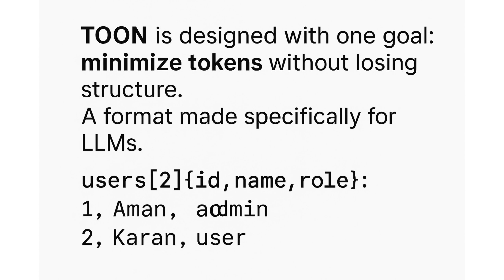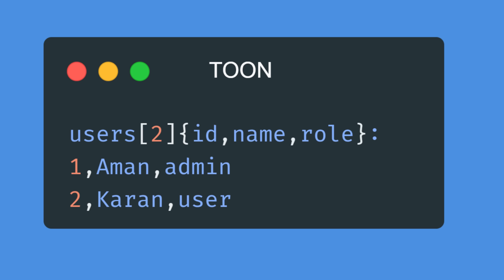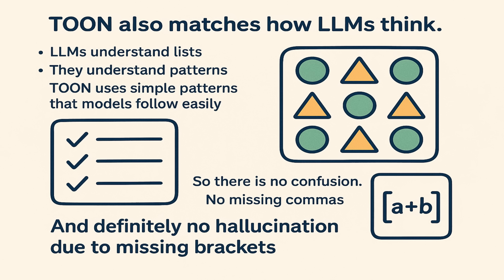This is how a typical multi-object JSON can be represented in TOON structure. TOON has removed all the unnecessary punctuation, including braces, quotes, and repeated field names — the main issues we just discussed with JSON. This instantly cuts down the token count, resulting in lower cost and faster processing. TOON also packs data tightly: there is just one definition — for example, a user array of size 2 with the field names declared once — and the remaining part is just the data without any repetition. TOON also matches how LLMs think. LLMs understand lists and patterns, and TOON uses simple patterns that models can follow easily. So there is no confusion, no missing commas, and no hallucinations due to missing brackets. All of this results in fewer tokens, which means faster inference, less hallucination, and most importantly, lower cost.